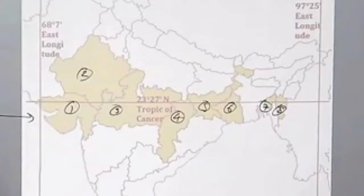The Tropic of Cancer is in the south. The question is: which state does the Tropic of Cancer does not pass through? The answer is Orissa. Orissa is the answer.